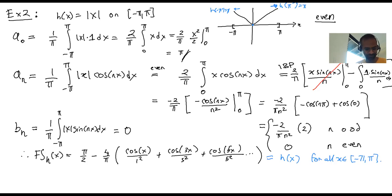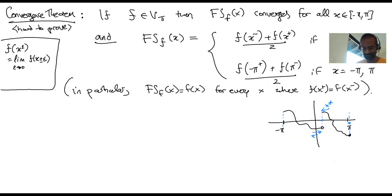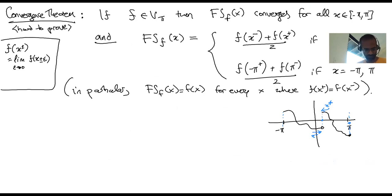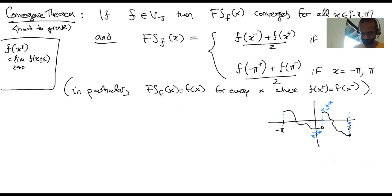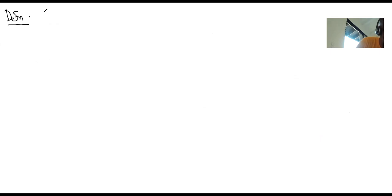Sines and cosines are really smooth functions, so how can you write absolute value as a sum of them? At this point it is a theorem. To convey this, I'll show you some demonstrations. To show the demonstrations I'll need one more concept which is useful for visualizing — thinking of these as periodic waves.